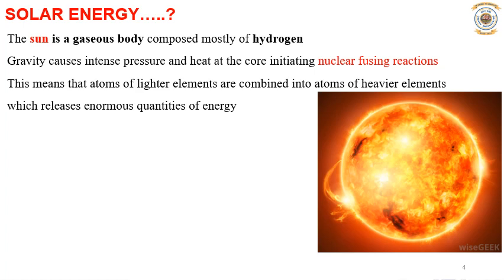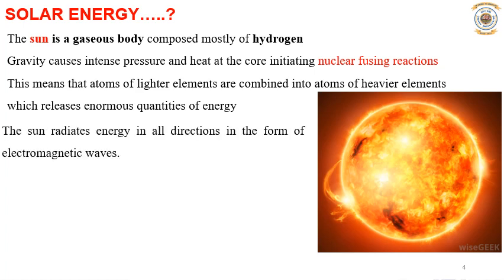The solar energy received in the form of radiation can be converted directly or indirectly into other forms of energy such as heat or electricity, which can be utilized by humans. Since the sun is expected to radiate at an essentially constant rate for a few billion years, it may be regarded as an inexhaustible source of energy.